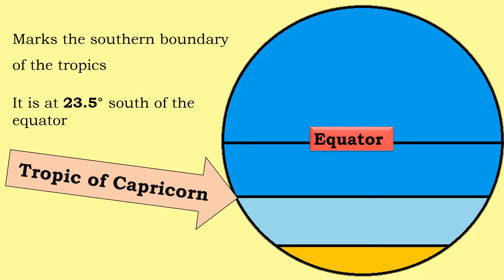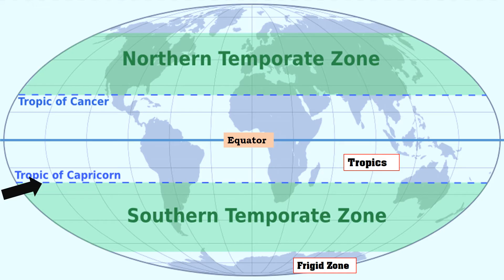Another important line of latitude is the Tropic of Capricorn. This line lies at 23 degrees 30 minutes south. It marks the southern boundary of the tropics.